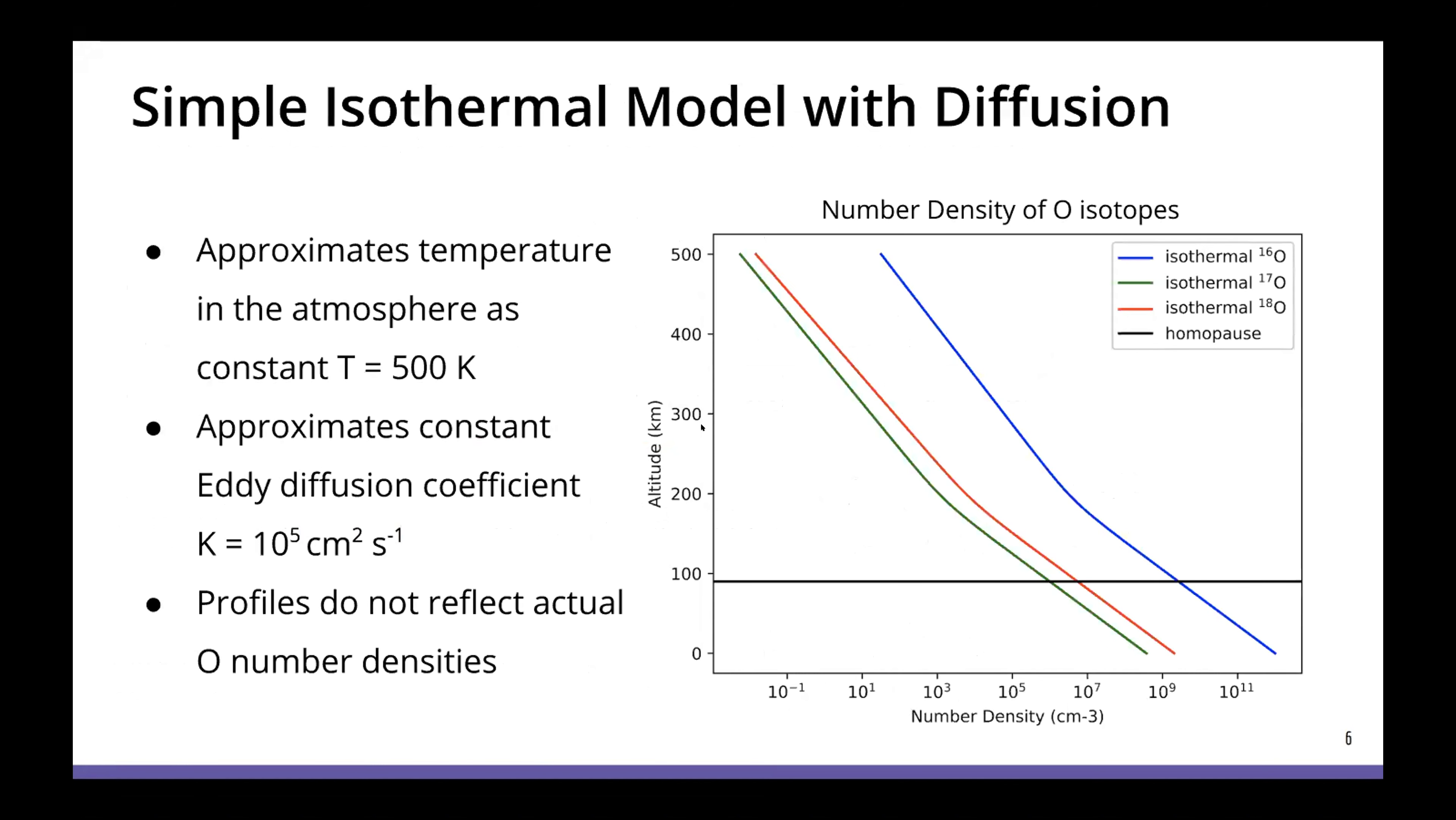So here are the initial number density results from our simple isothermal model with diffusion. So this is again, only using diffusion to approximate the behavior of oxygen atoms and the temperature is approximated as constant T equals 500 Kelvin, which is not accurate. This also approximates a constant eddy diffusion coefficient. So these profiles do not reflect the actual oxygen number densities, but the behavior is what we care about. And what we see here is that you can see a slope shift from where it should be below the homopause and above the homopause. But since this is not fully accurate, the homopause is actually around 200 kilometers instead of 100 kilometers where it should be.